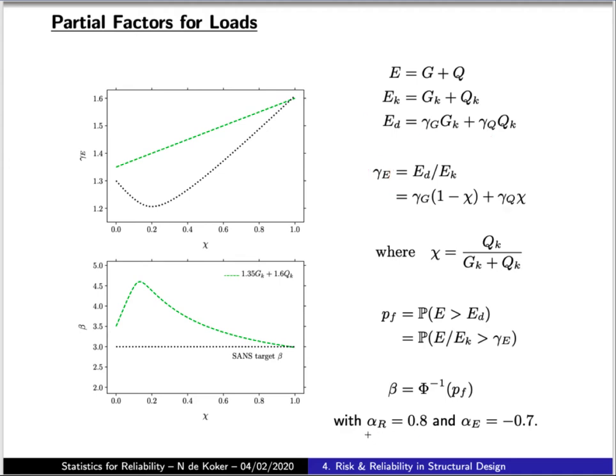If we adjust for the relative contributions to the reliability from resistance and load effect terms, we can determine a probability of failure, which we can then write in terms of the partial factor. From this, we can determine our reliability index. We can solve this equation numerically for a given target value of reliability, which in our case here is 3.